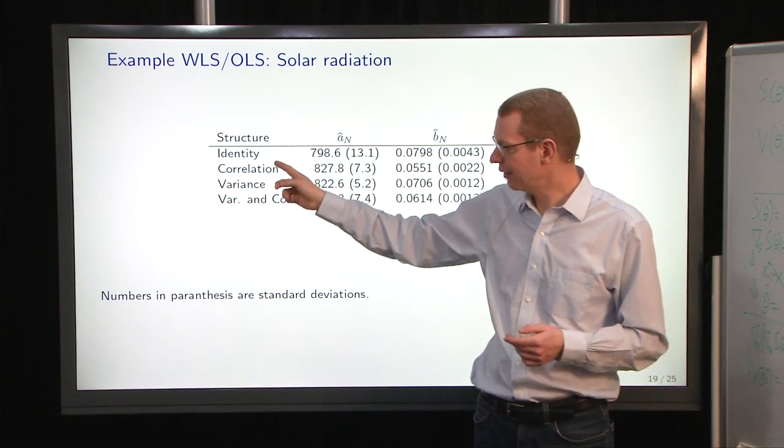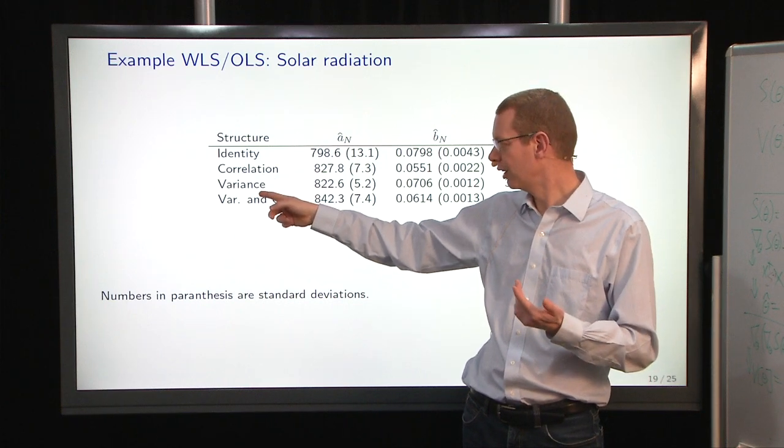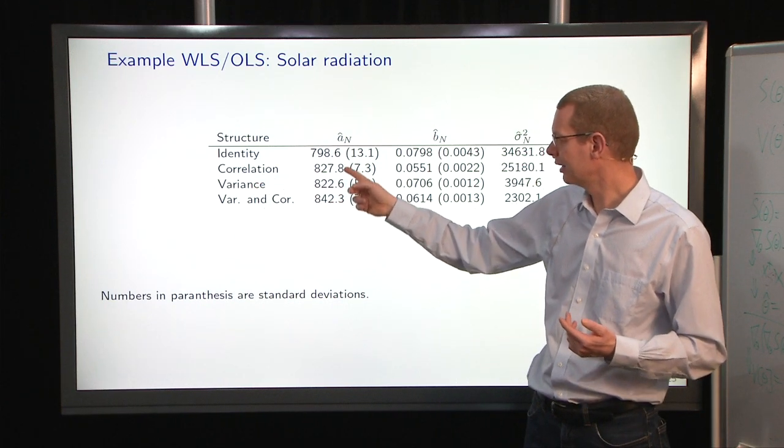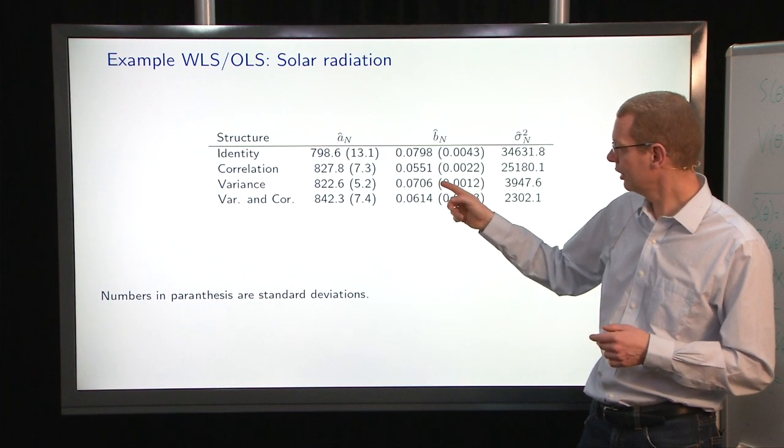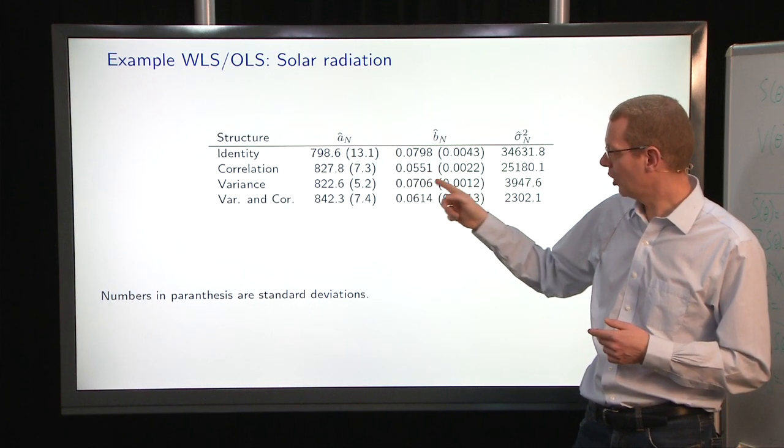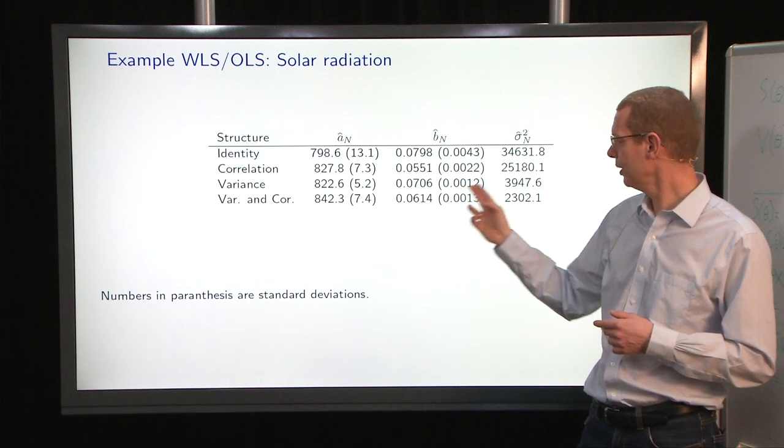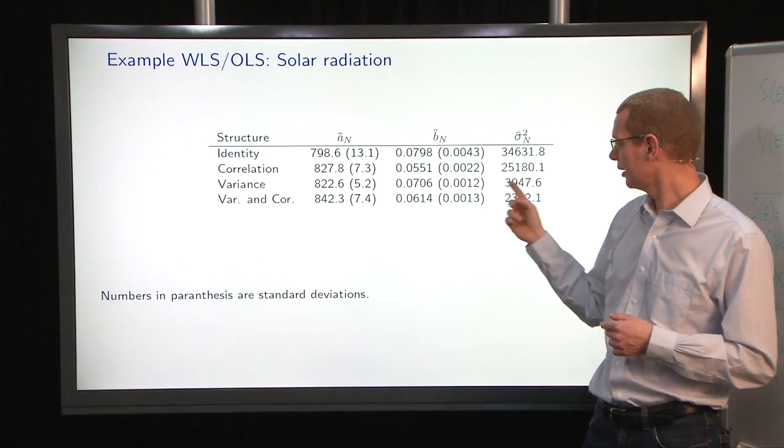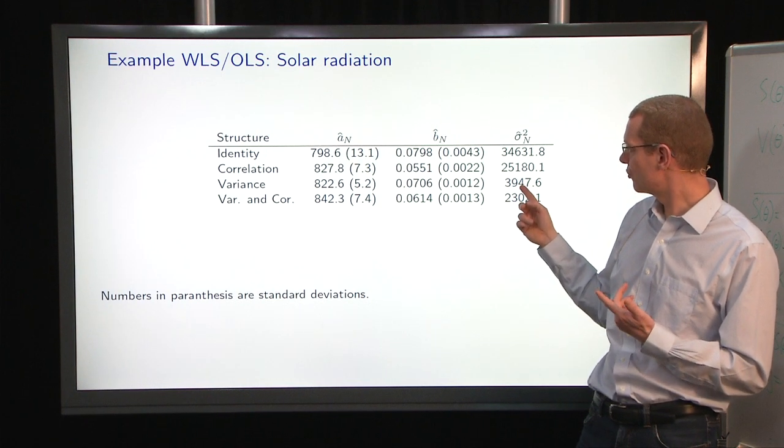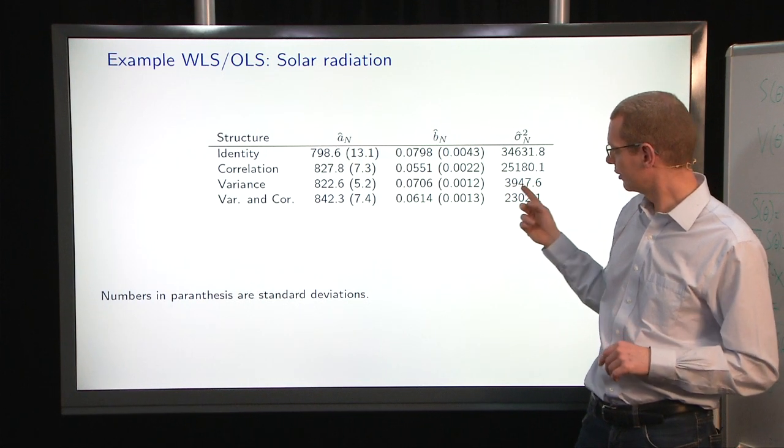Now, if you then, instead of having a correlation structure, include the variance structure, then we get a similar estimate here, again with a smaller uncertainty. We, again, step a little bit up in the slope here, but we, again, reduce the uncertainty on that, and then we see a huge drop in the estimate sigma out here, but we'll get back to that in a moment.